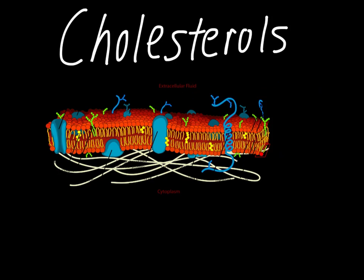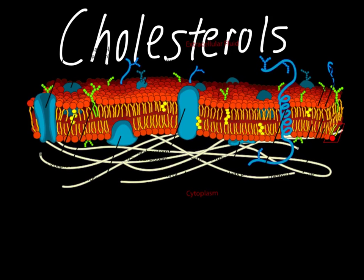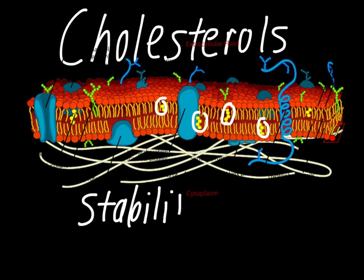Cholesterols are our next one. They actually provide a very important stability function for the cell. They're sort of little block-like structures that wedge in between the phospholipids. Think of the way a wedge works under a door — it takes up the open space and holds the door open. That's what these cholesterol molecules are doing: wedged in between the phospholipids, taking up space and making the membrane more rigid. If you didn't have cholesterols and the membrane bumped up against something hard, the phospholipids would shift apart and the membrane would basically be a lot more fragile.